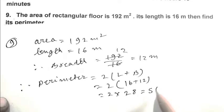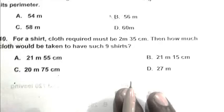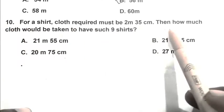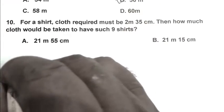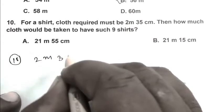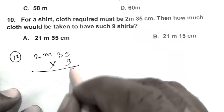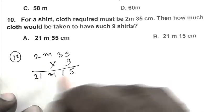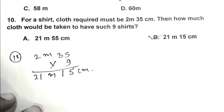Question number 10: For a shirt, cloth required must be 2 meter 35 centimeter. Then how much cloth would be taken to have such nine shirts? So friends, 2 meter 35 centimeter, we multiply with 9. It becomes 21 meter 15 centimeter. B is the right answer. Thank you for watching, have a good day.